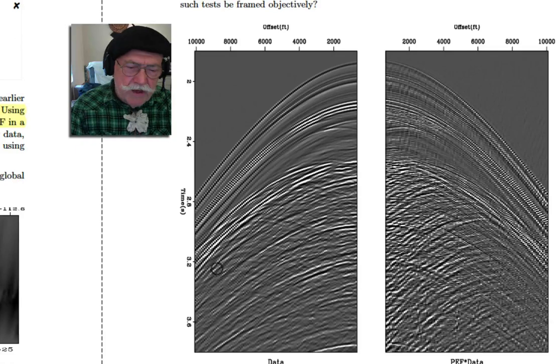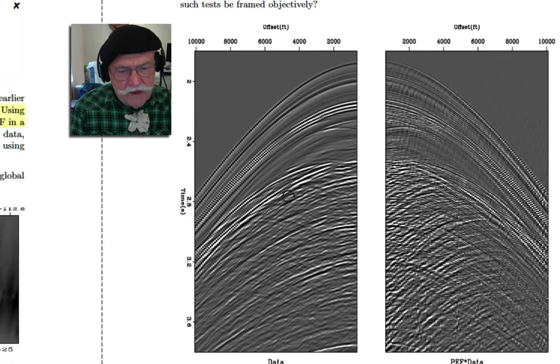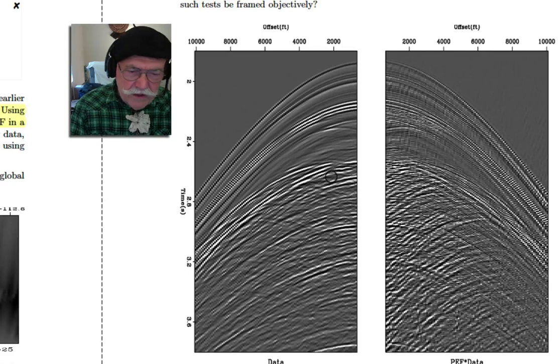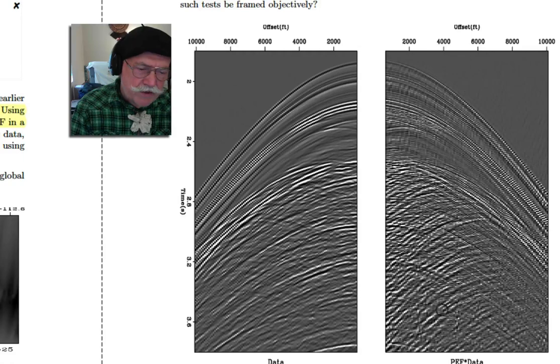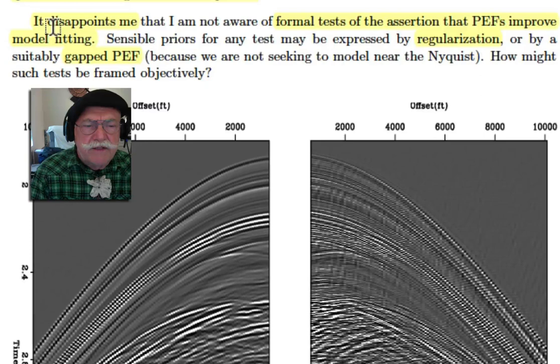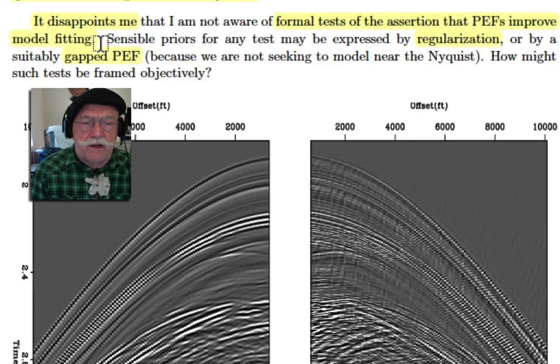Look what happens. If the residual continues to look like this, you'll have many iterations while you're trying to fit everything along the first break. And eventually you start to get things fit along this event. And then, once the residual starts to get weaker and weaker at this event, you'll start to see the weaker events in here. So as somebody dealing with this would, using this for their gradients, would be seeing these events right from the beginning. Now, I must say I am disappointed that I'm not aware of any formal tests by all the inversion theorists out there which test the assertion that PEFs improve the model fitting. Now, it doesn't really need a test because everyone in statistics asserts that. What is not tested is Claerbout's assertion that you'll get the solution faster.